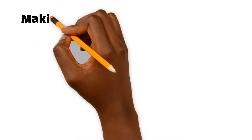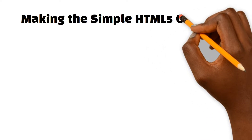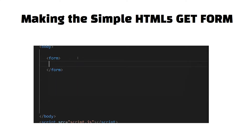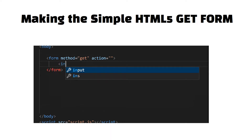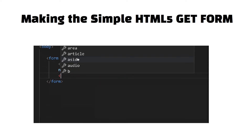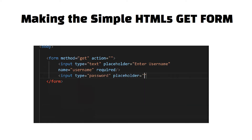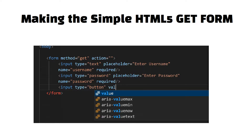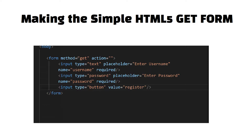Now we will implement this using a simple example in JavaScript. We will take a simple HTML GET form where the user submits their information. In this code sample, the form method is GET and it submits to the same page via the action attribute. Inside the form we have two input fields — the first is for username, and the name attribute is very much required here. Similarly we add a password field with the name attribute set to 'password', and then a register button.